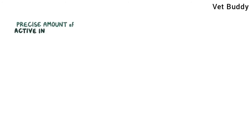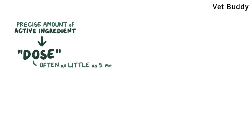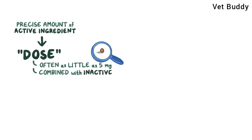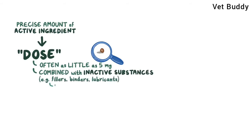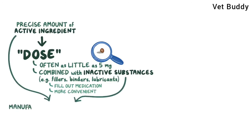Every medication contains a precise amount of the active ingredient, called the dose, which is often as little as 5 mg — that's less than a grain of sand. Since that's too small to even handle, it's usually combined with inactive substances like fillers, binders, and lubricants that serve to fill out the medication and make it more convenient to use. Together they get manufactured as a chemical preparation, like a pill, solution, spray, or ointment.